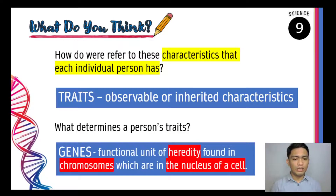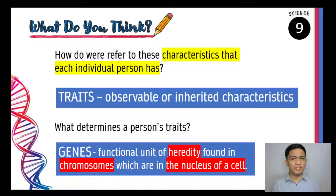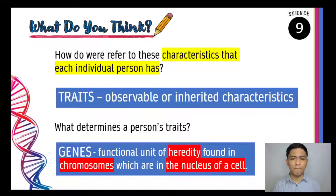Genes are actually the functional units of heredity — the basic unit of heredity — which are found in chromosomes. Chromosomes are found in the nucleus of a cell. Heredity refers to the passing of traits or characteristics from parents to their offspring. Genes are found in chromosomes, and chromosomes are found in the nucleus of a cell.